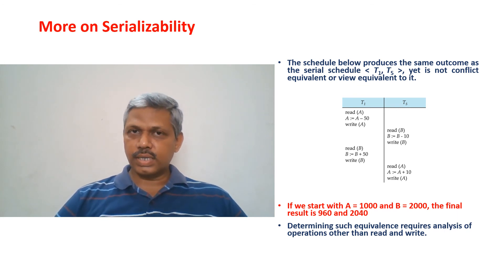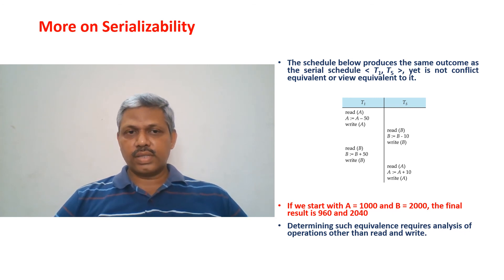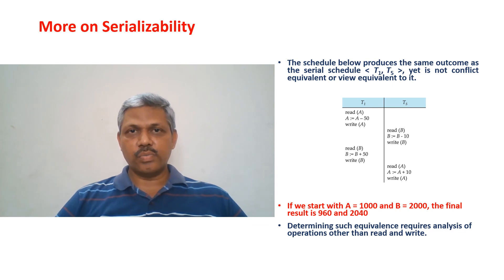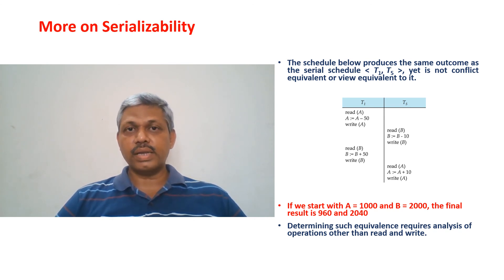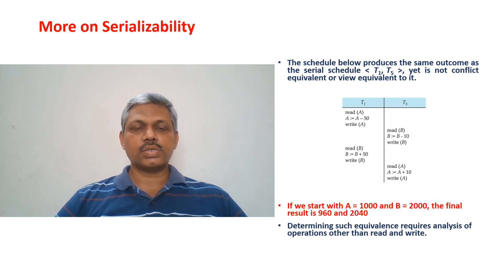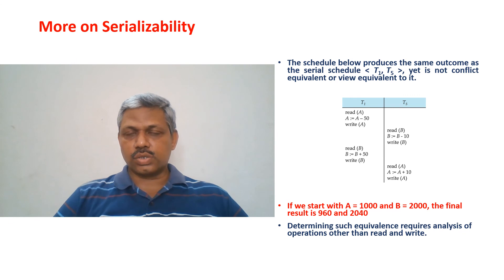Is it at least view serializable? If you consider the write B operations of T1 and T5, the final value of B is written by T1 in the given schedule. But if you make this a serial schedule, the final value of B would be written by T5. Hence it is not view equivalent to that serial schedule, and this schedule is not view serializable either. The schedule is neither view serializable nor conflict serializable.